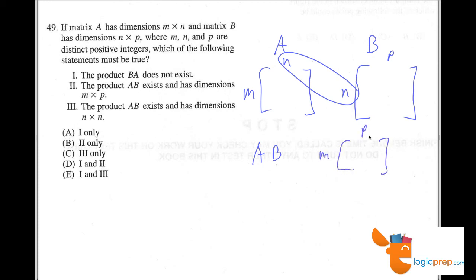Let's go through the answers. Which of the following statements must be true? The product BA does not exist. Well, if I flip these around and I make it B, which is p by n, and here I have m by n, we can see that the insides don't match up, and there is no product. So that's actually true. The product AB exists and has dimensions m by p. Well, we know when we multiply A by B, we get the two n's to match up. We have dimensions m by p in the outcome, and that's our product. So that's true as well.